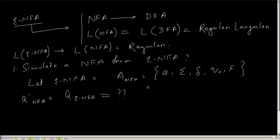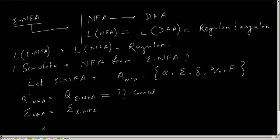The set of states for the newly created NFA is the same as that of the epsilon-NFA. Similarly, the alphabet set of the NFA will be the same as the alphabet set of the epsilon-NFA. The starting state will also be the same, so Q0 of the NFA equals Q0 of the epsilon-NFA.